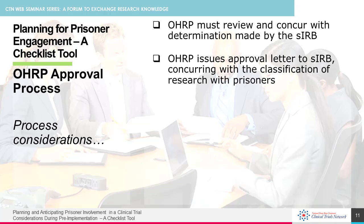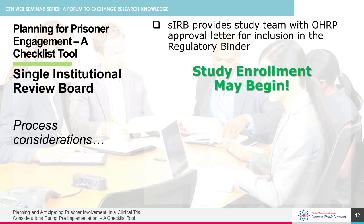The Office of Human Research Protections, or OHRP, is the organization that ultimately approves the request for the inclusion of prisoners. Once the IRB has reviewed the research and determined the classification of prisoner research and issued its approval letter, OHRP will then review what has been approved by the IRB. OHRP must review and concur with the determination of classification of prisoner research as made by the IRB, and will issue its approval letter to the IRB concurring with that classification. Once OHRP has issued its approval letter, study enrollment may begin.